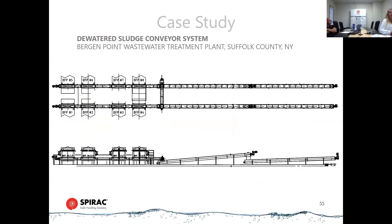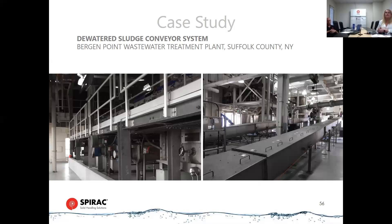One more case study: Bergen Point. These are all 75-foot long U-620s — a French trough — and they have quite a few belt filter presses feeding into it with dual trains. In the middle is a cross conveyor that goes from one side to the other depending on what trucks they want to load. They had originally had some other conveyors that were not sized properly, so SPIRAC was able to come in and offer a solution that helped them. They're very happy — they've been running for seven to eight years, and it's been a good installation.